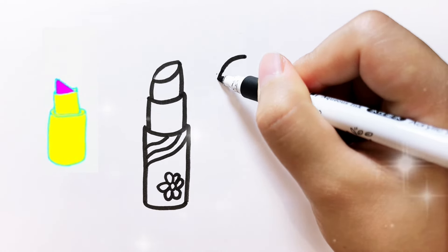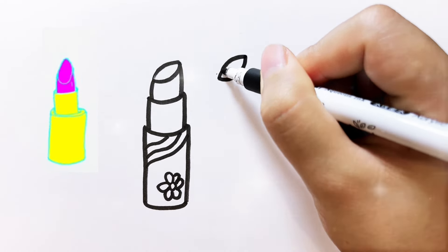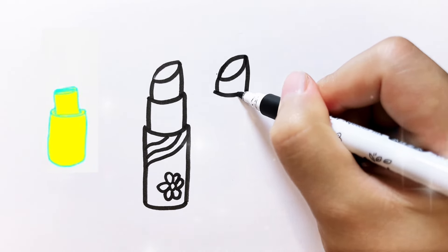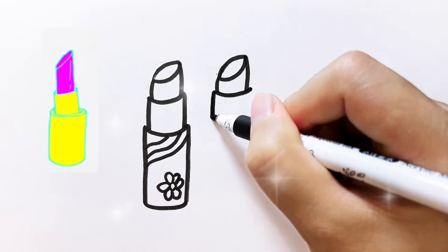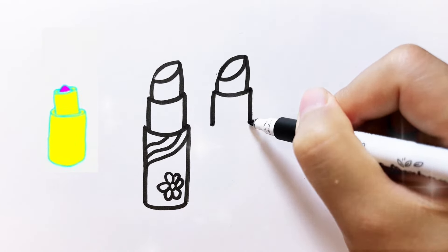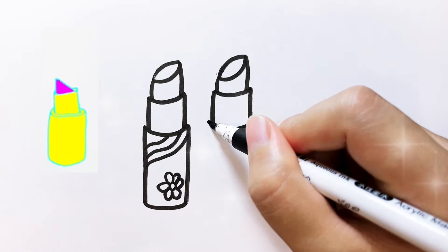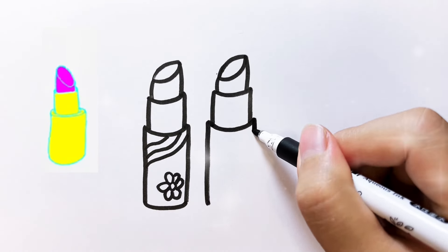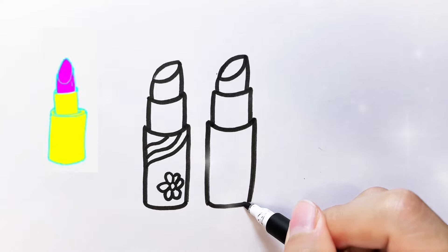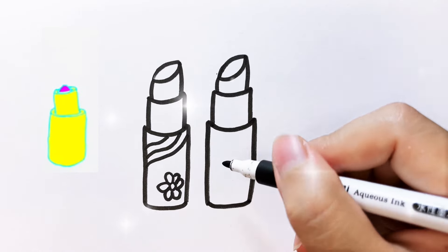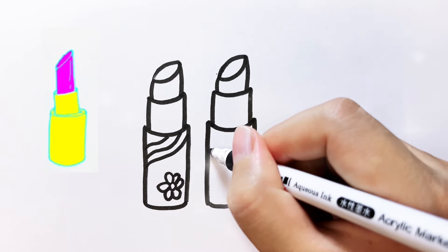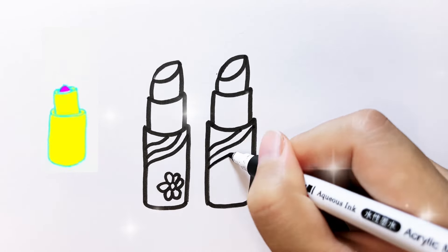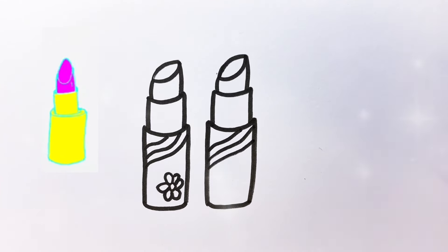A, B, C, D, E, F, G H, I, J, K, L, M, N, O, P Q, R, S, T, U, V W, X, Y, and Z. Now I know my ABCs, next time won't you sing with me?